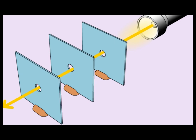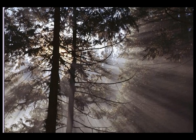When there are obstacles in the path of light, it cannot pass through. Have you ever walked in our tropical rainforest? You can see light rays passing through the canopy, creating a beautiful sight. This is a good example for us to observe that light travels in a straight line.